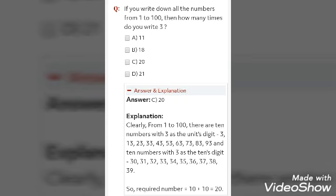Now, next question. If you write down all the numbers from 1 to 100, then how many times do you write 3? So 3 is a number. If we are writing from 1 to 100, how many times you will write 3? So understand the question. How many times it is been asked? The options are 11, 18, 20 or 21. Now, the answer is 20.